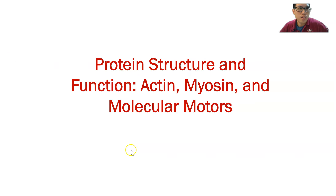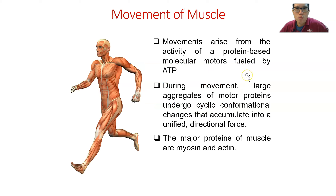For the protein structure, muscle contains actin and myosin as the major proteins. Movement arises from the activity of protein-based molecular motors fueled by ATP — without ATP there is no movement. During movement, large aggregates of motor proteins undergo a cycle of conformational change that accumulates into a unified directional force.